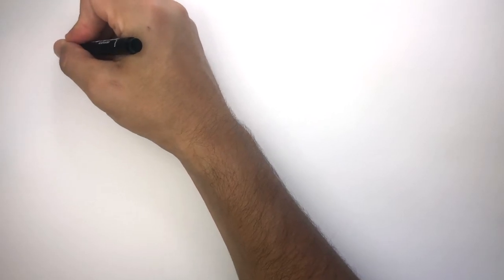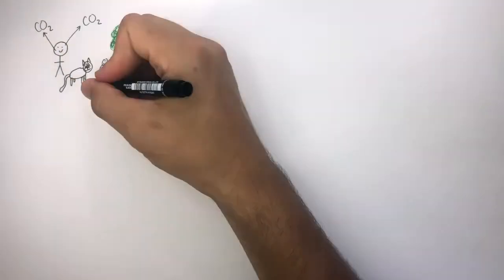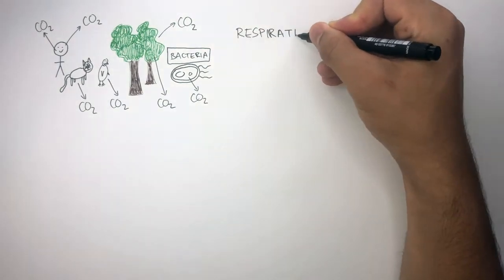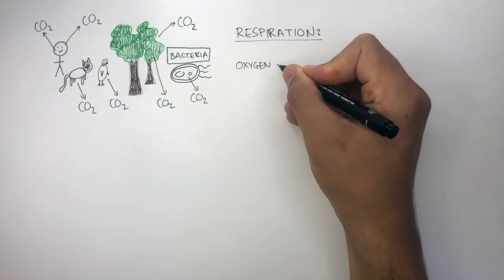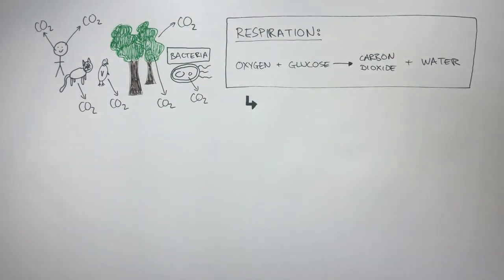Here I'm drawing diagrams to represent animals, trees, and microorganisms, in this case bacteria. These organisms are living things, and living things respire. Because all living things respire, all of these organisms release carbon dioxide into Earth's atmosphere. Respiration is a chemical reaction where oxygen reacts with glucose to produce carbon dioxide and water. Remember, all living things respire, releasing carbon dioxide into Earth's atmosphere.